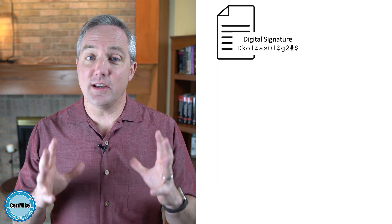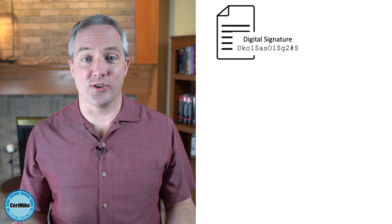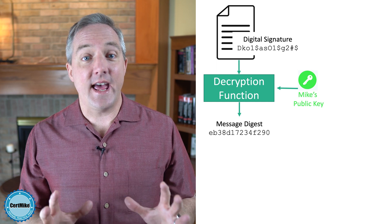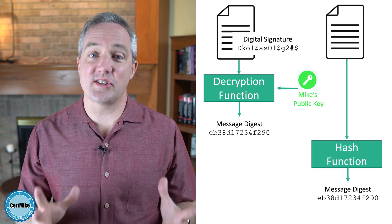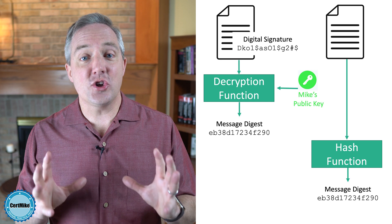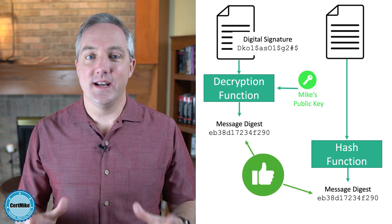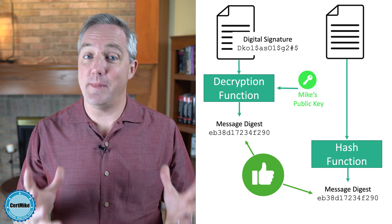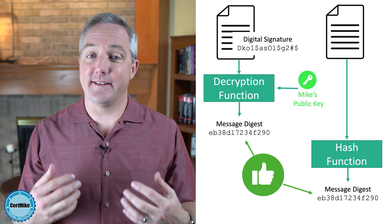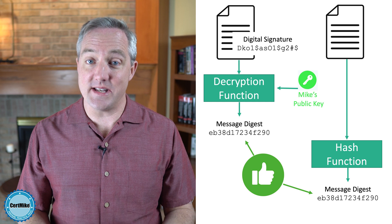When Susan receives the message, she can see both the message contents and the digital signature attached to it. Susan verifies my digital signature by reversing the process: she takes the digital signature and decrypts it using my public key, giving her the message digest that I encrypted. Next, she takes the text of the message and runs it through the same hash function to get her own copy of the message digest. Then she compares the two values. If they match, the digital signature is verified — Susan can be confident the message is authentic, meaning it really came from me, and that it has integrity, meaning the message she received is identical to the one I sent.